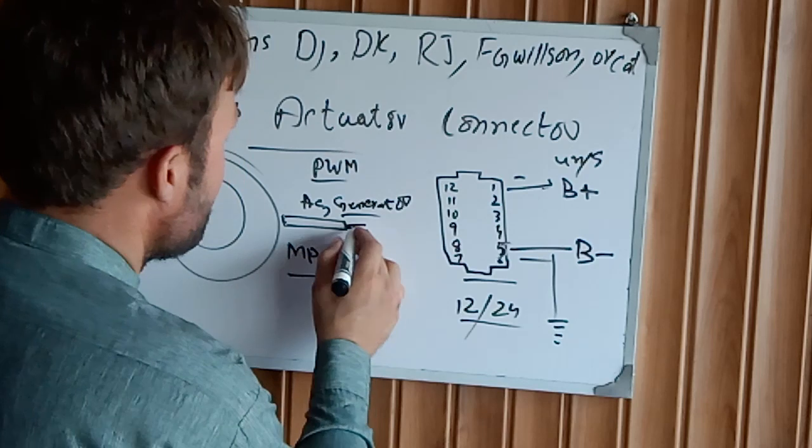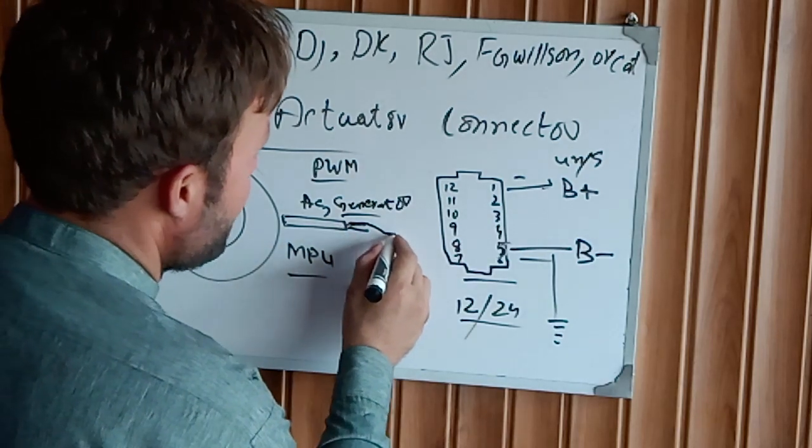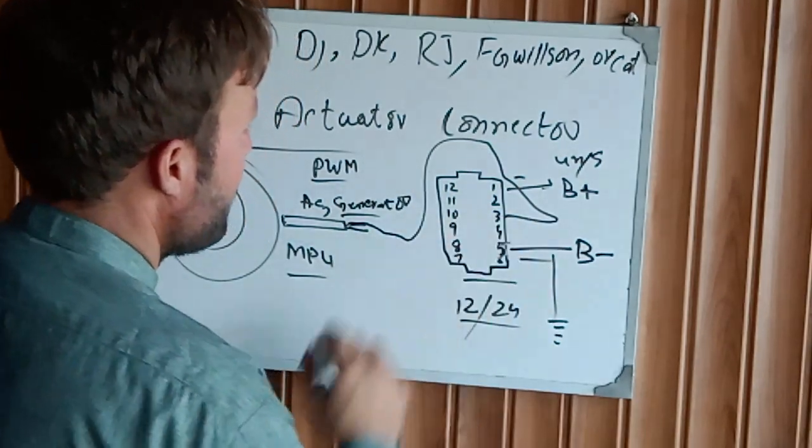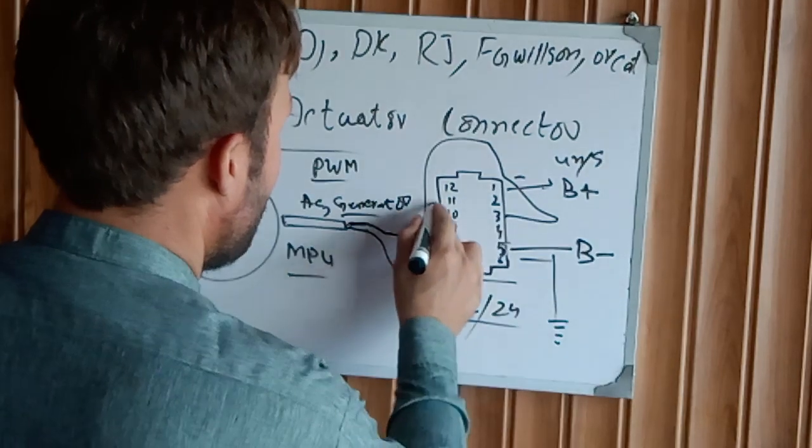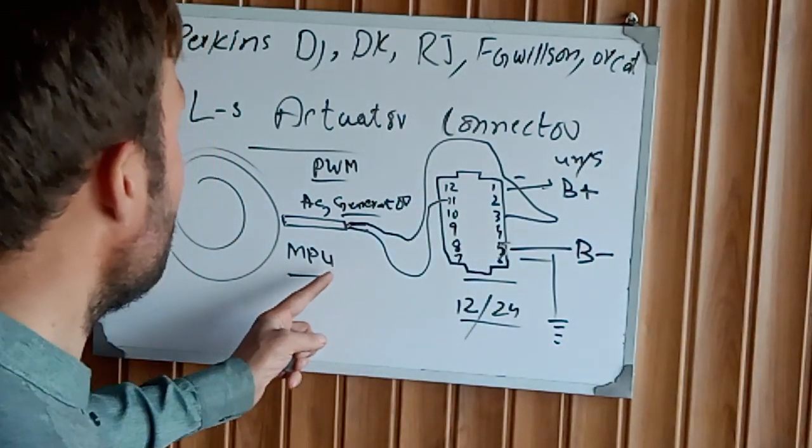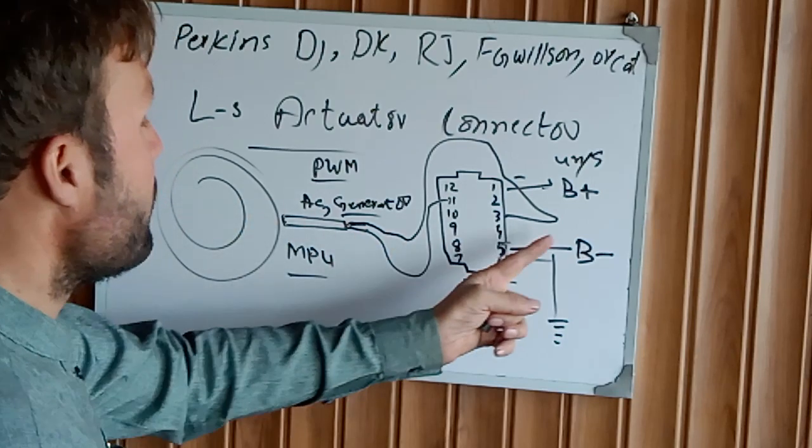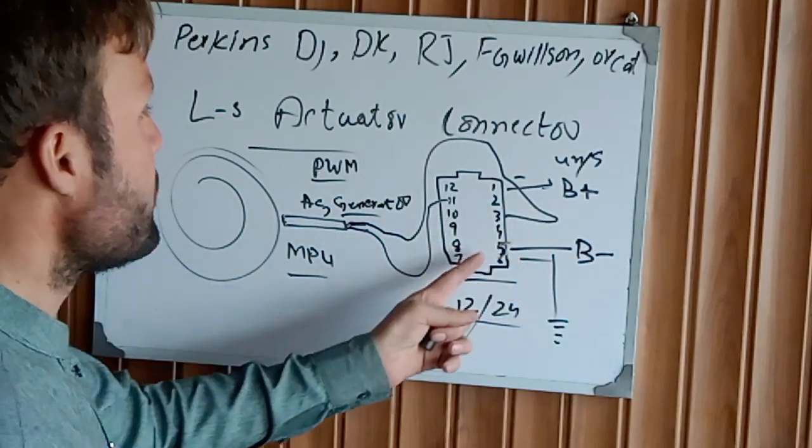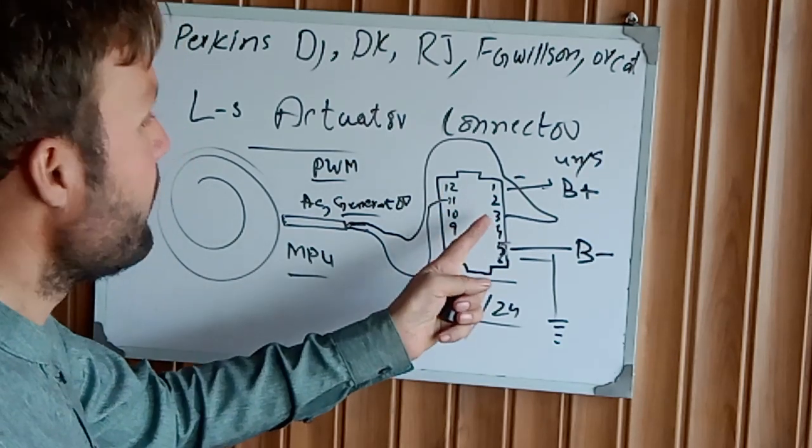Which pins are connected with the MPU to the actuator? Pin number 3 and pin number 11 connect the MPU to the actuator. When you crank the engine, first the controller sends the command to turn on the fuel system and turn on the actuator.